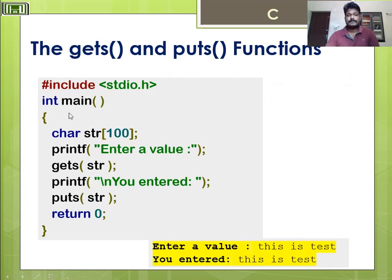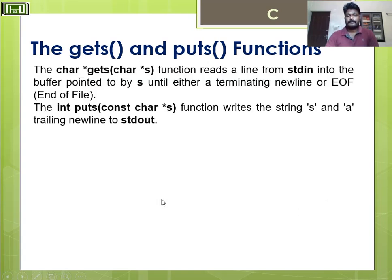Here is the example for gets and puts. A character array string is declared, then gets reads the string, and puts outputs it. When you enter 'this is a test', the entire line is displayed in the output. This is the difference — gets and puts reads a line from stdin into the buffer and writes the string with a trailing newline to stdout.